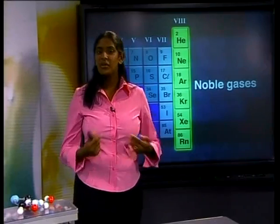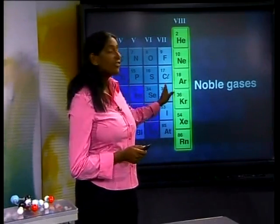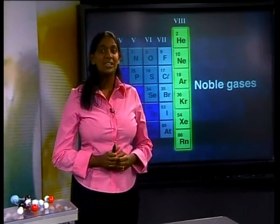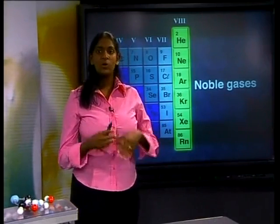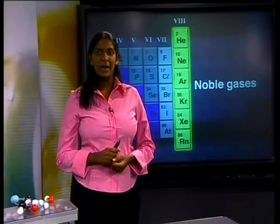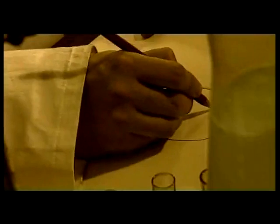It is very important to note that only the noble gases of group 8 have filled outer energy levels. These gases are all very stable and do not react to form compounds. In 1916, a chemist named Gilbert Lewis used this property of noble gases to explain why other elements react to form compounds.